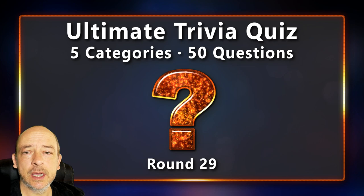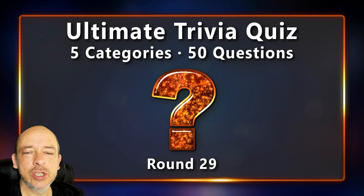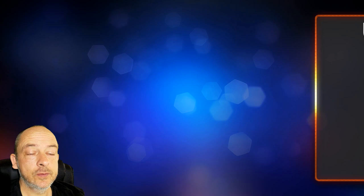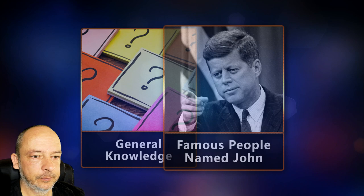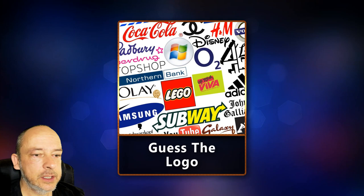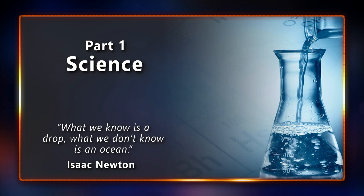Hello Trivia Friends, welcome back to another round of general knowledge questions. My name is Sean, this is round 29 of the Ultimate Trivia Quiz. I've put together quite a good collection of questions to test your general knowledge and see how much you know about the world around us. Let's take a look at the topics for today: first up, science, geography, general knowledge mix, famous people named John, and finally, guess the logo. Let's start the quiz.